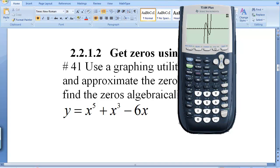You do second calc, zero, move the cursor so it's to the left of that point. Notice at this point the y value is negative. So we've got the left bound, hit enter, then move it to the right of that point and notice at this point the y value is positive. Hit enter again and I don't want to put a guess in so I'll hit enter.